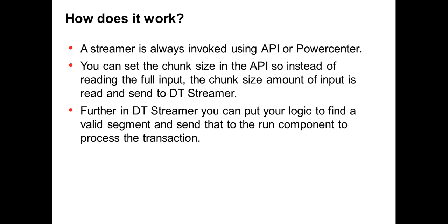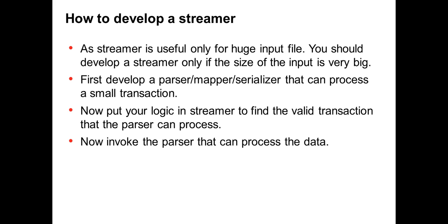Once the DT streamer gets the chunk size amount of data, it applies its own logic. You can put your own logic to determine what to send to the next transformation. Note that as streamer is useful only for huge input files, you should think before developing one. If you're not expecting a very big input file, you don't need a streamer — it will have extra overhead and performance impact because you'd be doing unnecessary splitting for a small file where a parser can do the same job.